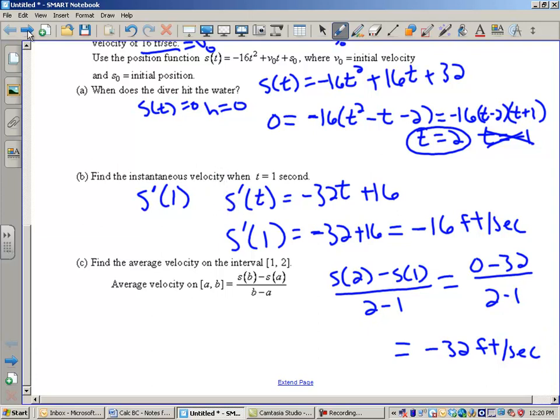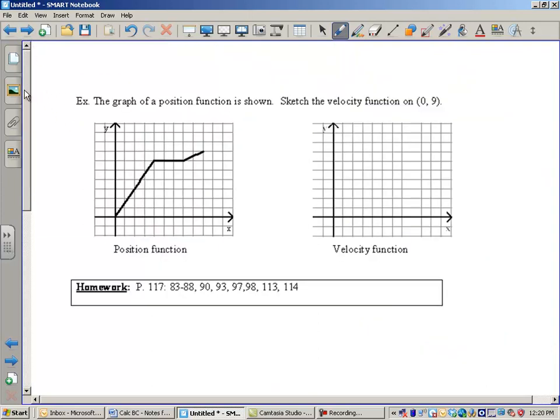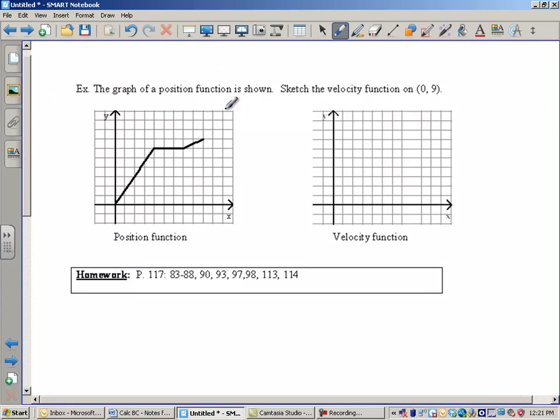Okay, so let's go take a look at one last example. You're going to have to draw some velocity functions from a position function. You need to know that velocity is the first derivative of position. So it describes the slope to position. So here's your position function. Let's take a look at these slopes. This has three unique slopes.